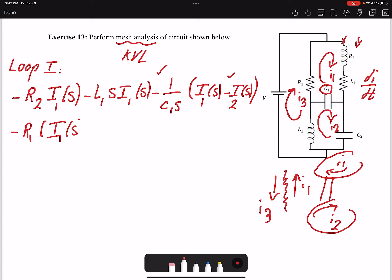One negative R1, I1(s) minus I2(s) equals zero. That's the first loop. If I go through the second loop, I'll write it Loop 2.